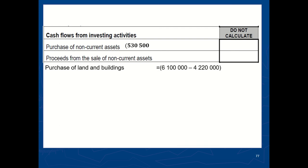We also purchased land and buildings. And obviously, for you to determine how much you purchase, you take this year's balance minus last year's balance, which is six million one hundred thousand minus four million two hundred and twenty thousand rand. And it'll give you one million eight hundred and eighty thousand rand.